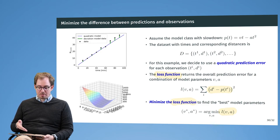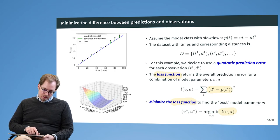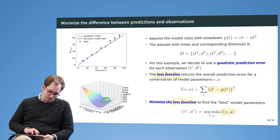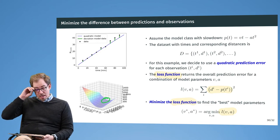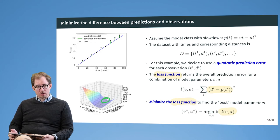We have a two-dimensional convex optimization problem, so we can simply apply gradient descent to find the best model parameters. The plot shows the loss for possible V and A parameters, with a visible minimizer. In the lab exercises, you will apply gradient descent to find the best model parameters for this data set using a quadratic prediction error.